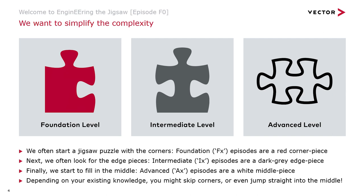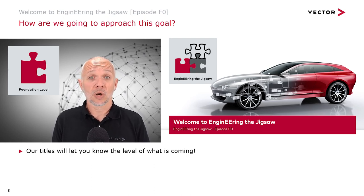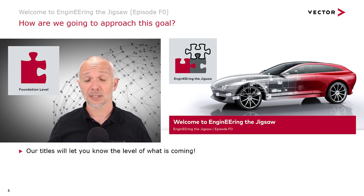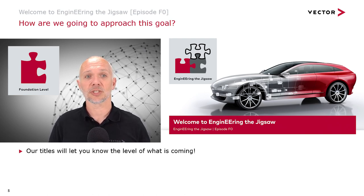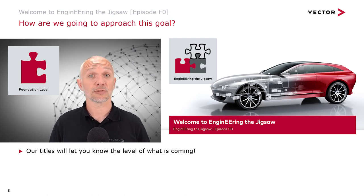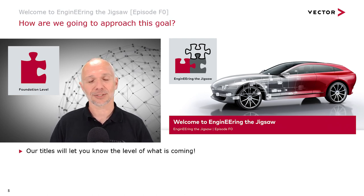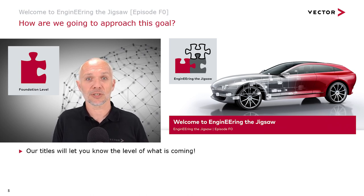Depending on your existing knowledge you might want to skip the corners or even jump straight into the middle, and you're welcome to do that, but we hope there will be something in every episode for everybody. Our titles will let you know the level of what's coming — at the start of today's episode you'll have seen the red corner piece. The title is Welcome to Engineering the Jigsaw, followed by brackets with episode F for foundation, zero. So we use F for foundation, I for intermediate, and A for advanced, so you'll know what's coming in the first couple of seconds.